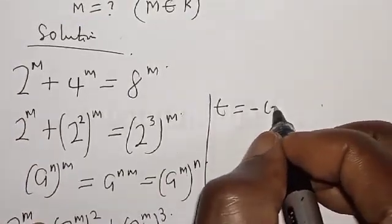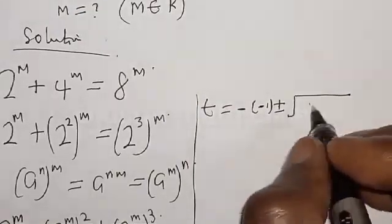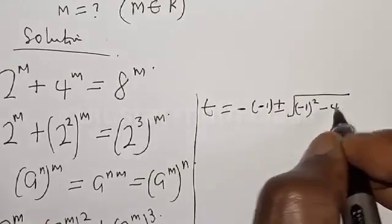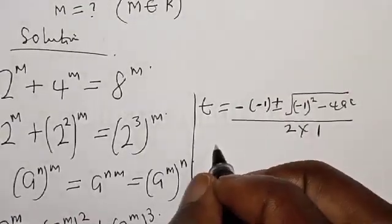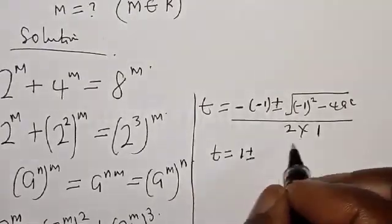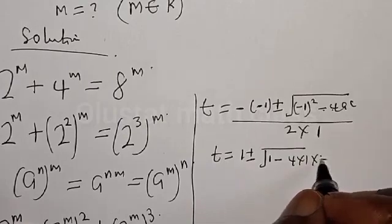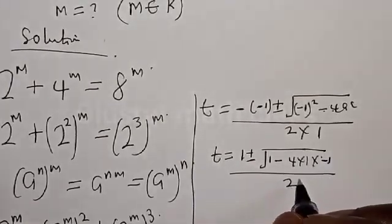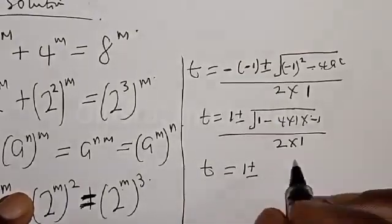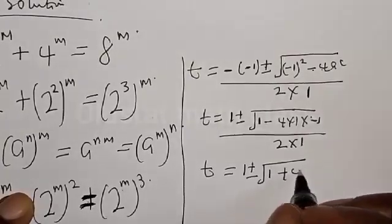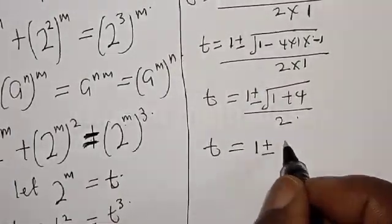Substituting: t equals negative of negative 1, plus or minus the square root of negative 1 squared minus 4 times 1 times negative 1, over 2 times 1. This simplifies to t equals 1 plus or minus square root of 1 plus 4 over 2, giving t equals 1 plus or minus square root of 5 over 2.